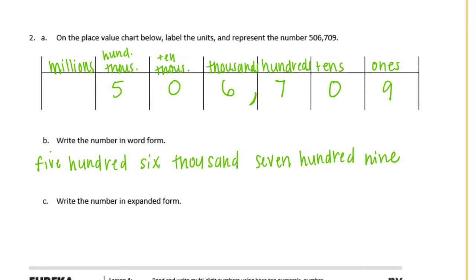Now, I know it's tempting to put an 'and' in there. A lot of people like to say 'five hundred six thousand and seven hundred nine.' But 'and' — you'll learn later on, maybe later this year but definitely in 5th grade — 'and' represents a decimal point. So we don't want any 'ands' when we're writing out this number in word form, and really there shouldn't be any 'ands' when you just speak it as well, unless you're talking about a decimal point. So from now on, no more 'ands' unless you're talking about a decimal point.